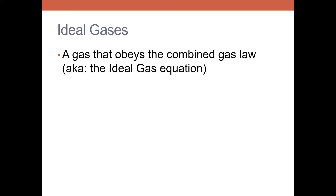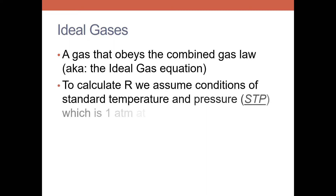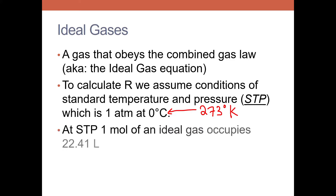To calculate R, we assume conditions of standard temperature and pressure: one atmosphere at zero degrees Celsius, which is 273 degrees Kelvin. At STP, if you remember from our moles unit, one mole of a gas will occupy 22.4 liters of volume.